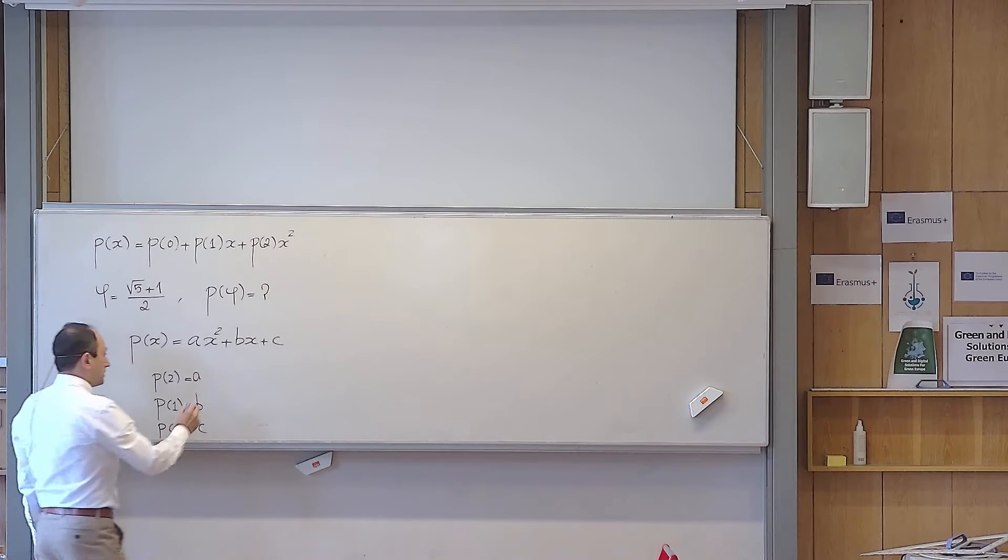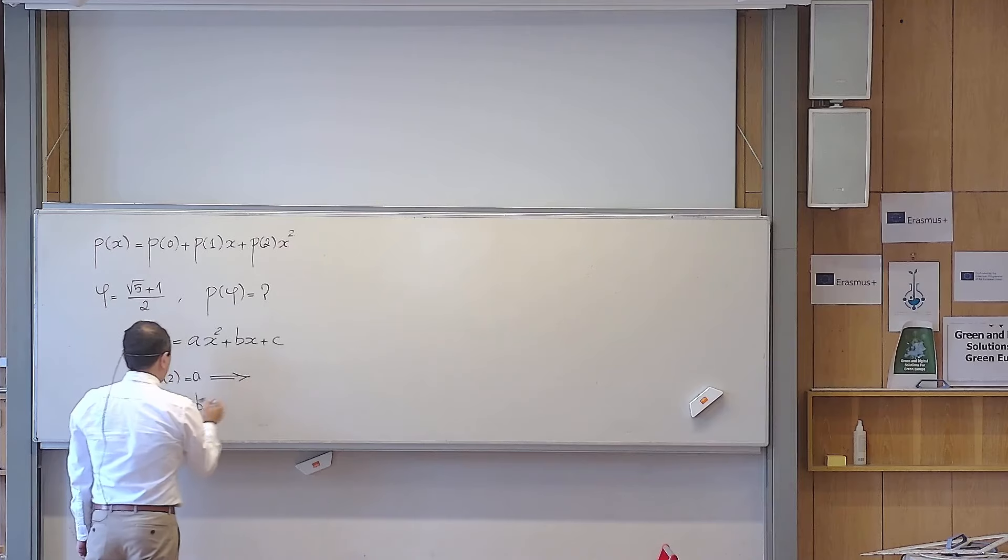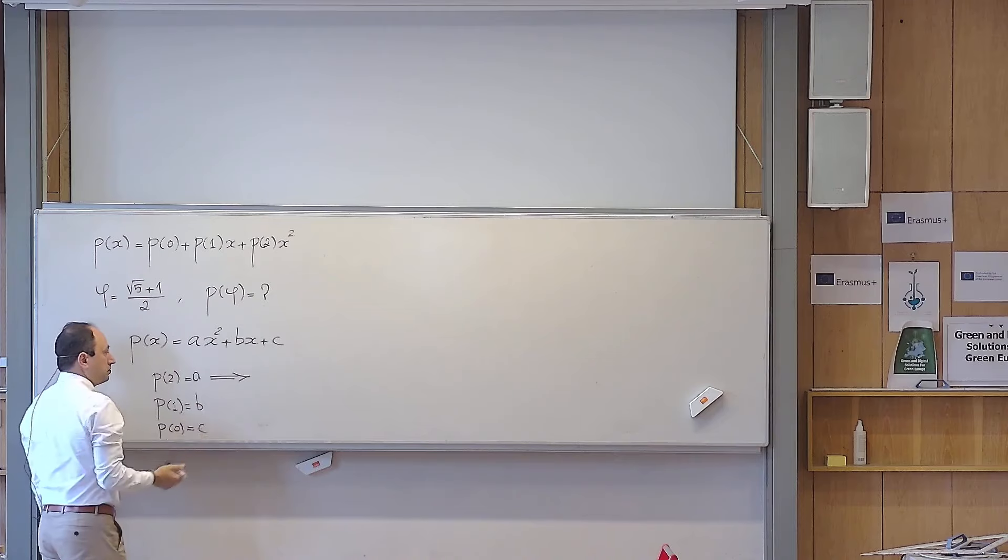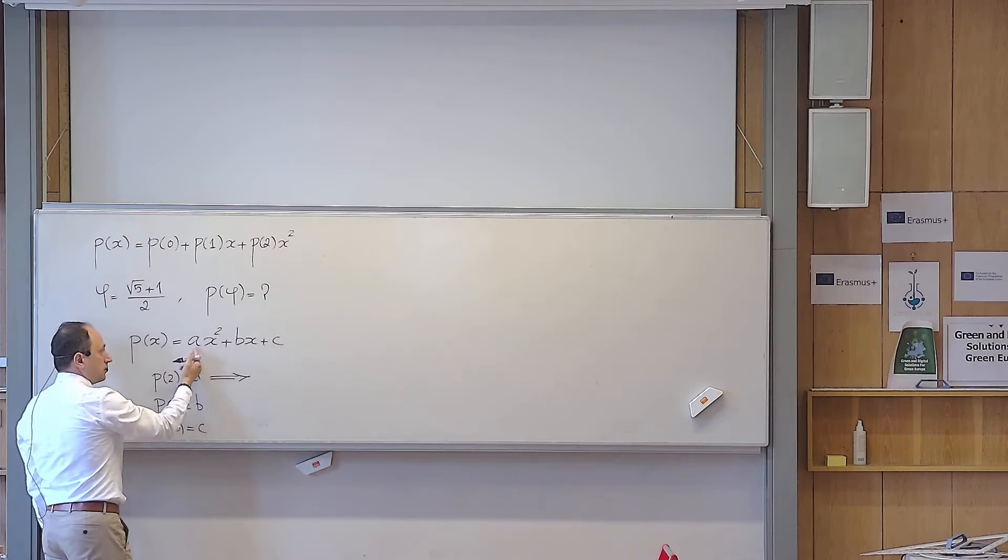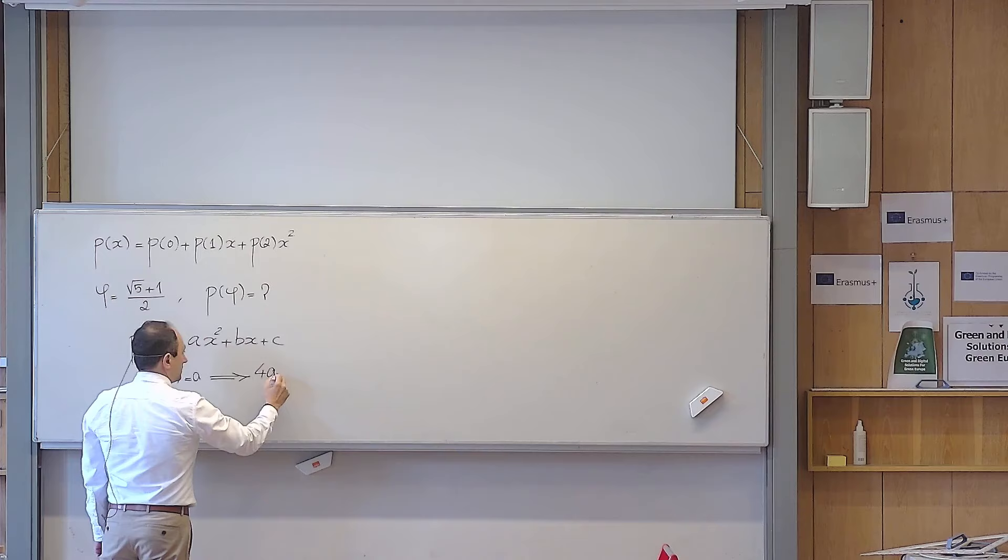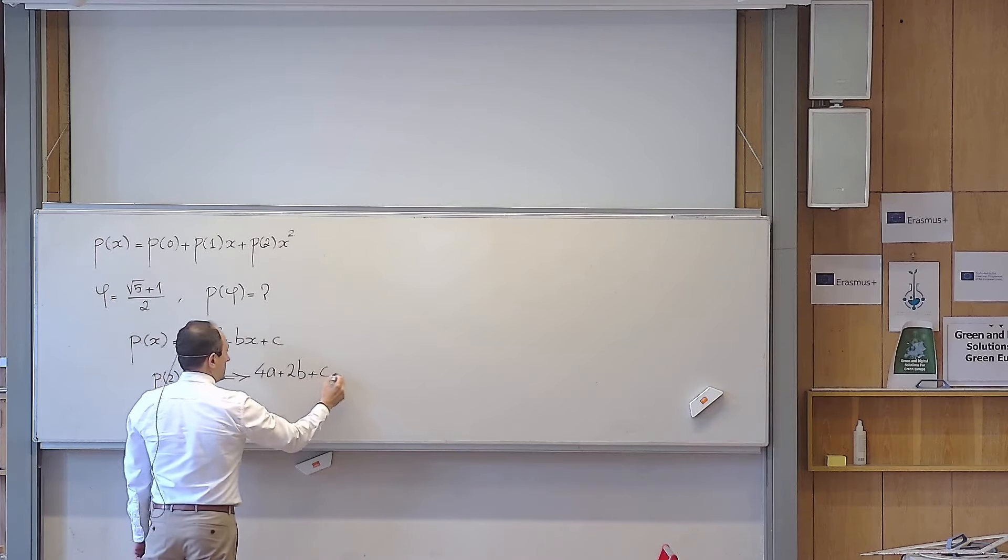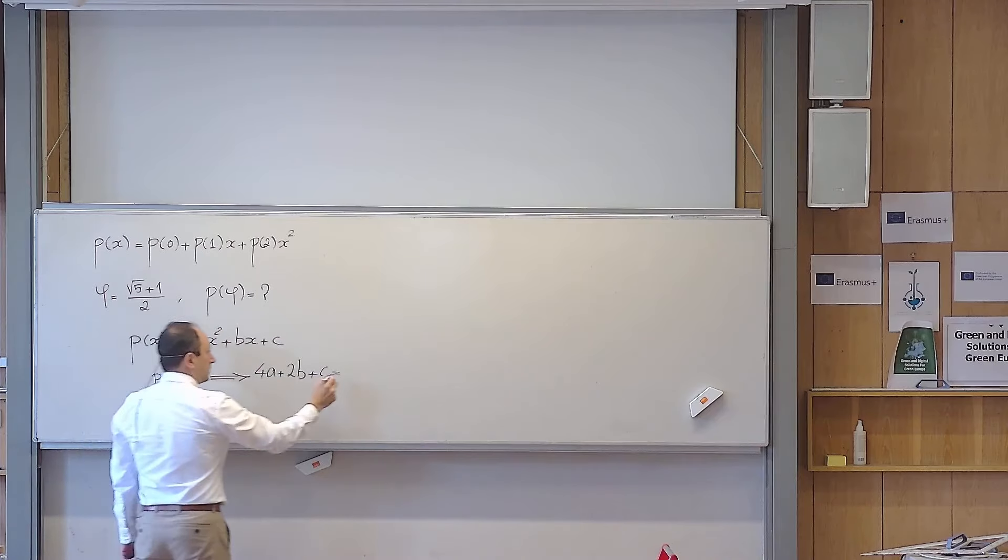But now, this is not that hard to see what happens. P(2) is a. This is my P(x). I want to calculate P(2). So I replace every appearance of x with 2. So this becomes 4a plus 2b plus c is equal to a.